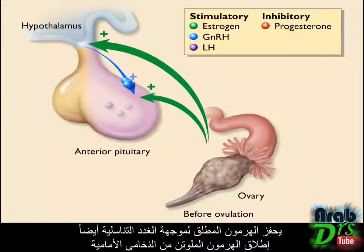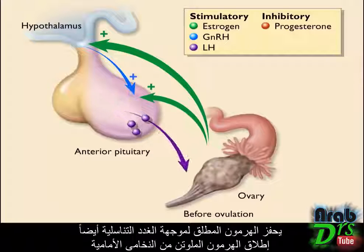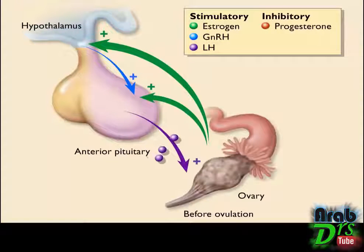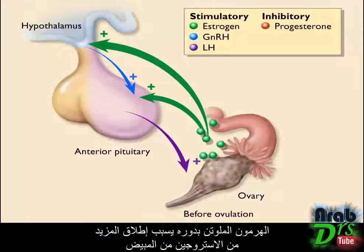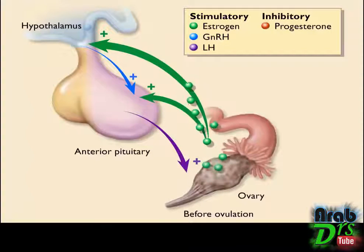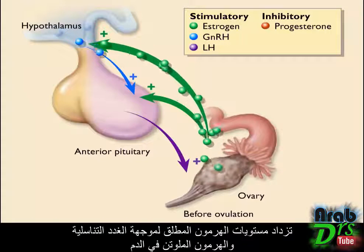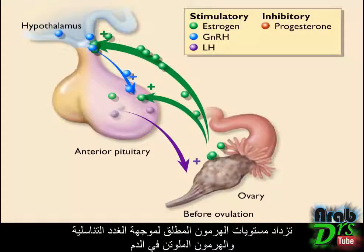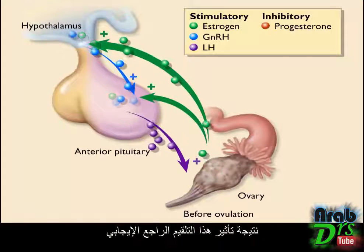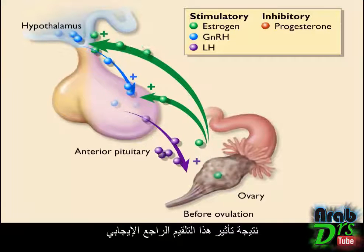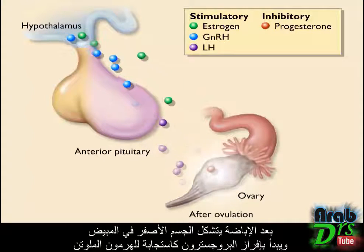Gonadotropin-releasing hormone also stimulates release of luteinizing hormone from the anterior pituitary. Luteinizing hormone in turn causes release of additional estrogen from the ovary. The levels of gonadotropin-releasing hormone and luteinizing hormone increase in the blood due to this positive feedback effect.